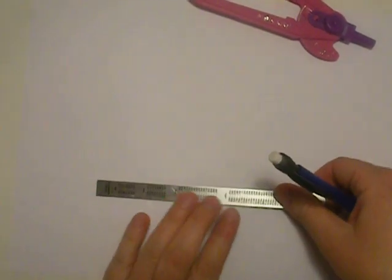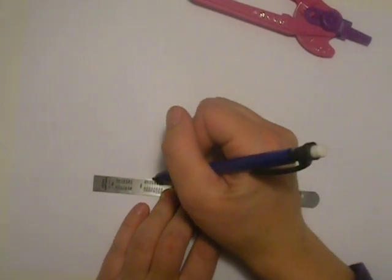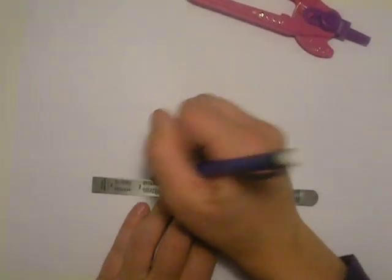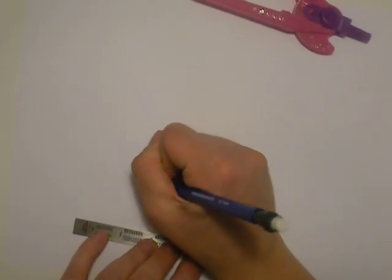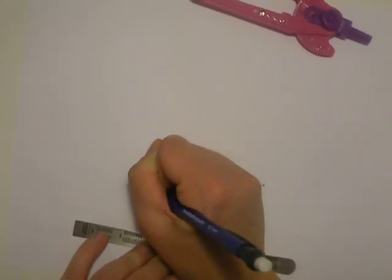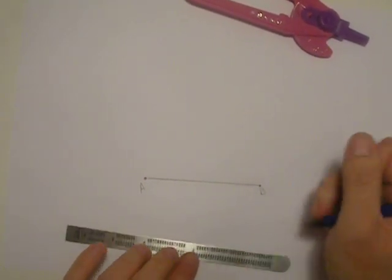I'm going to teach you how to make an isosceles triangle using a compass and a straight edge. We're going to start out with this line with endpoints A and B.